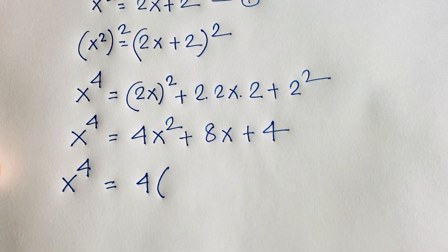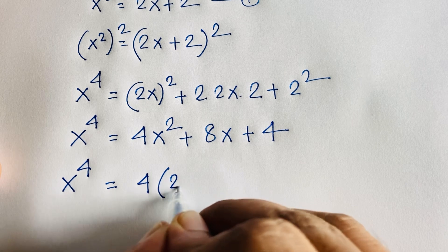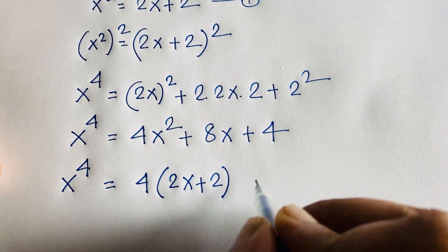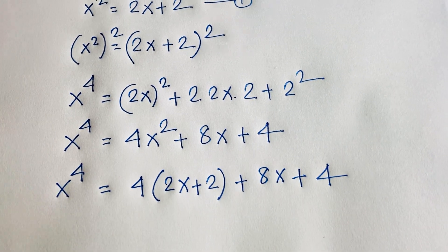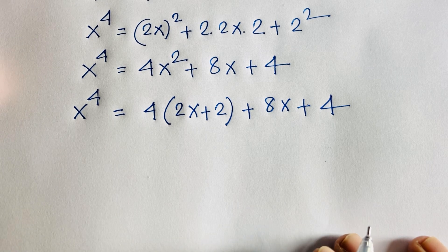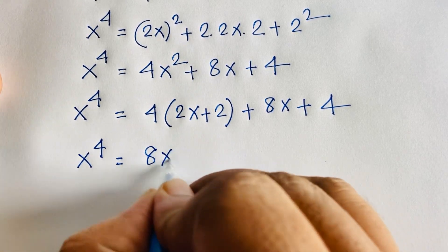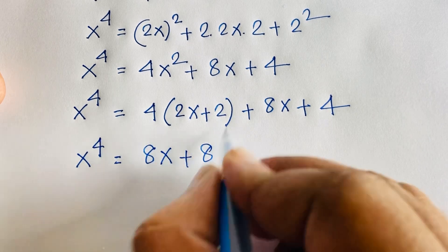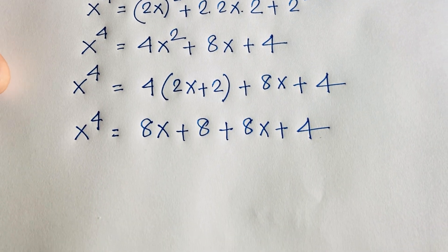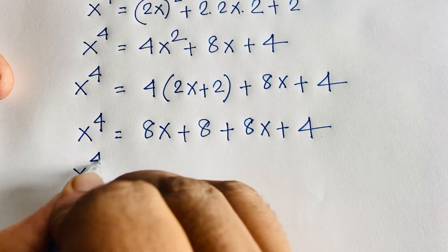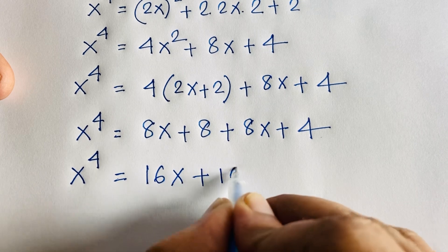We substitute our first equation x² = 2x + 2 into the expression 4x²+ 8x + 4. Replacing x² gives 4·(2x + 2) + 8x + 4 = 8x + 8 + 8x + 4. Combining like terms: x⁴ = 16x + 12.